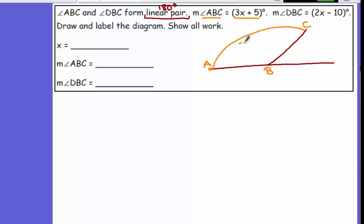Angle ABC is 3X plus 5. And angle DBC. So we're missing a D over here. We already have a D and a C. So from here to here is 2X minus 10.